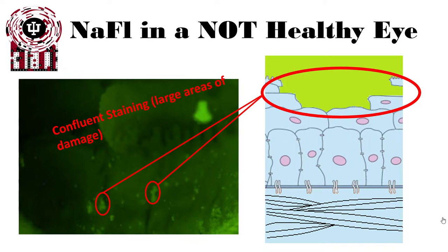As we lose more and more cells and have more damaged areas of the cornea — such as from an abrasion — we start to get more confluent staining. This means large areas of damage, and the fluorescing areas we see become larger and larger. Note that the corneal basement membrane, or Bowman's layer, is still intact in this situation.